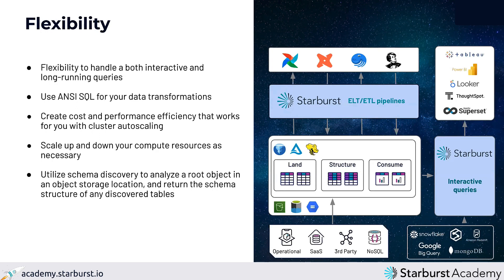Starburst Galaxy also lets you run both interactive and long-running queries, utilizing ANSI SQL for your data transformations. We also have a new feature called Schema Discovery, which allows you to analyze a root object in your object storage location and return the schema structure of any discovered tables. This helps you get the most out of your data, which can be stored in many different file types such as JSON, Parquet, ORC, and Text.